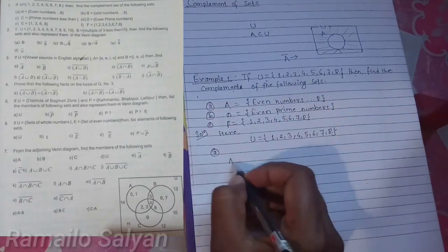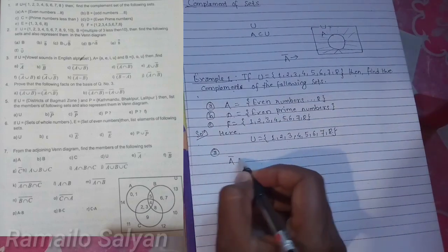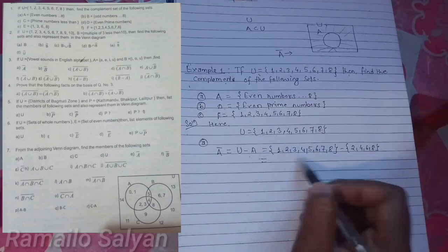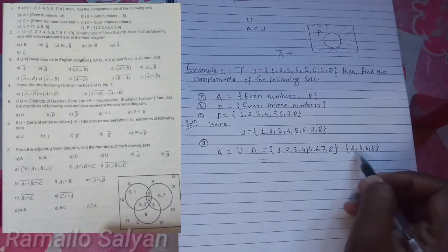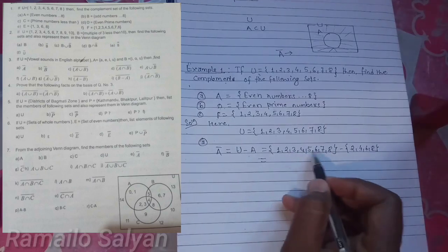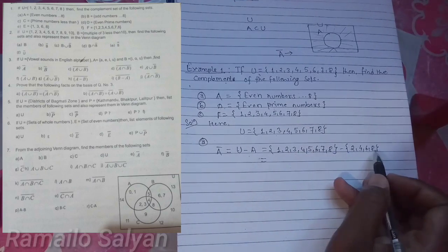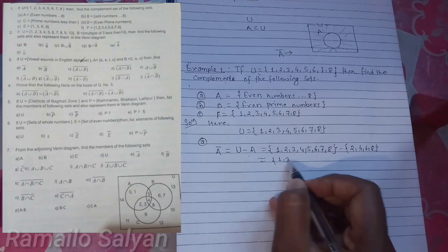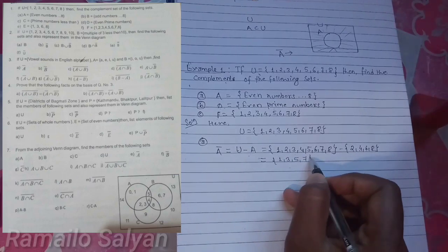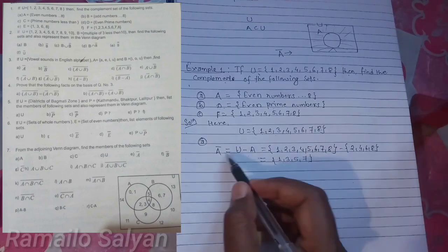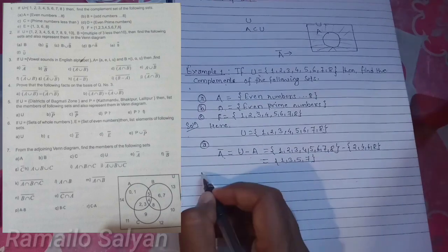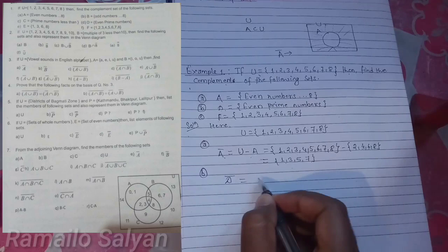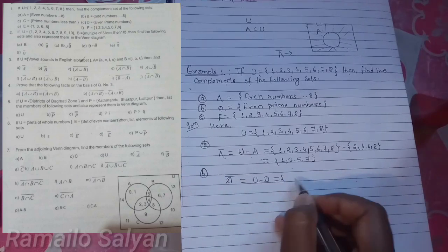U = {1, 2, 3, 4, 5, 6, 7, 8}. A complement means U difference A — the set of elements contained in U but not in A. Since A = {2, 4, 6, 8}, the remaining elements in U are {1, 3, 5, 7}. These are the members of A complement.